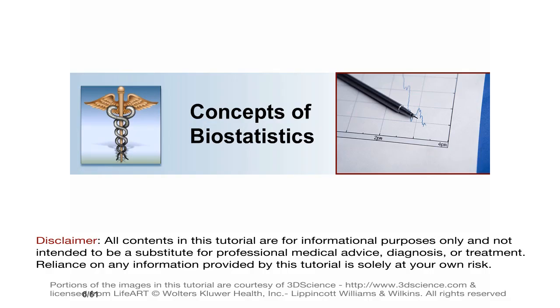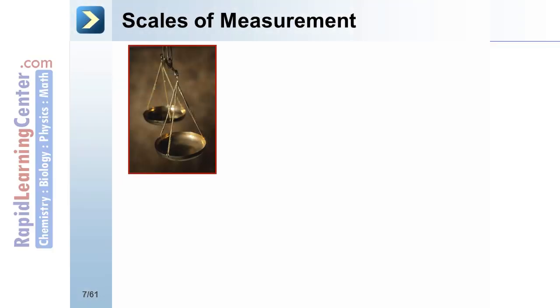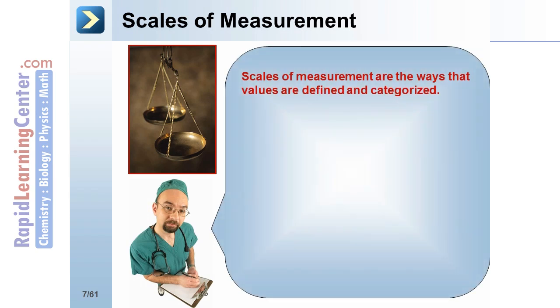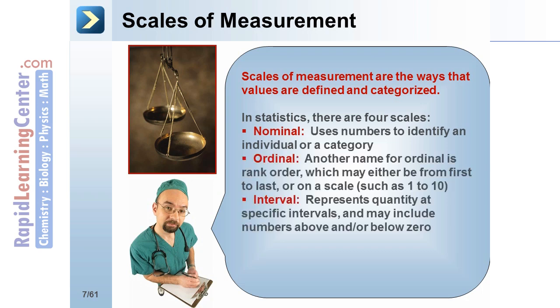We begin with an exploration of specific concepts in biostatistics. Scales of measurement are the ways that values are defined and categorized. In statistics there are four scales: nominal, which uses numbers to identify an individual or a category.